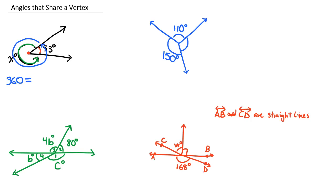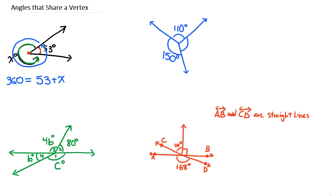So if we know the total is 360, and one of them is 53 and one of them is x, we can write an equation. To solve, we're looking for what number we add to 53 to get 360. We do the opposite by subtracting 53, and we get 307 degrees. It's always good to check: is this a logical solution? Is it bigger than 90, bigger than 180, bigger than 270? Yes — so 307 degrees is a logical solution.